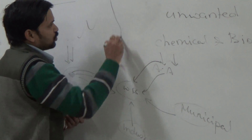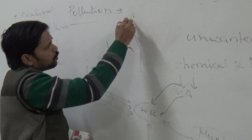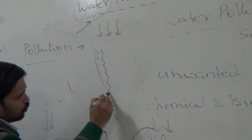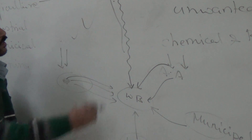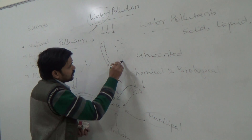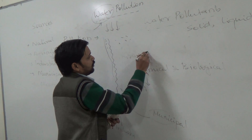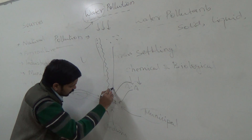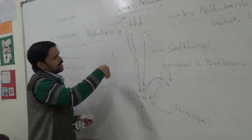In a mining area, various loose particles are generated. These loose particles, by the action of rain, flow down and get mixed into nearby water reservoirs. Additionally, these particles get suspended in the air and, by the action of gravitational settling, settle down and get mixed into the water reservoir, which causes water pollution.